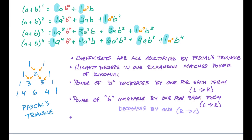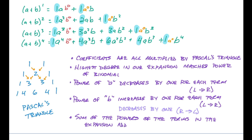The last thing to point out is that the sum of all your exponents in each term always adds up to the same power as the binomial. For example, 3 plus 1 is 4, 2 plus 2 is 4, and so on. The sum of the powers of the terms in the expansion equals the power of the binomial. In IB you'll often need to expand binomials quickly — we'll look at that in our next video. Make sure you give me a thumbs up and I'll see you in the next one.